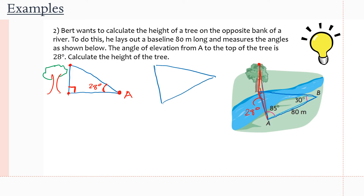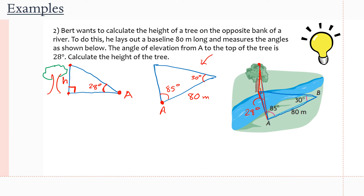The flat ground triangle has point A, an 80-meter baseline, angles of 85 degrees and 30 degrees, and we want to find side x — the distance from A across to the base of the tree. These two triangles share that common side x on the ground crossing the river. If we can find x from the flat triangle, we can use it in the right-angle triangle to find the height h.